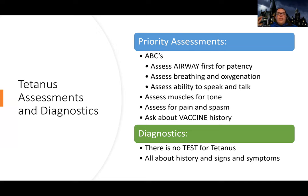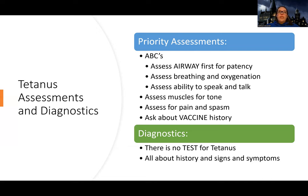We're going to look at their work of breathing, their oxygenation, and we want to assess their ability to speak and talk — that's a big indicator. One sign that's not very positive for good airway patency is if they can't speak or talk. Then I'm probably also going to assess their muscles for tone: are their muscles rigid? Are there spasms happening? What's their pain level? These are all going to be important things.